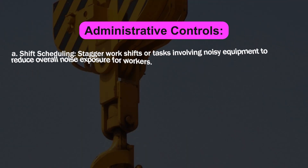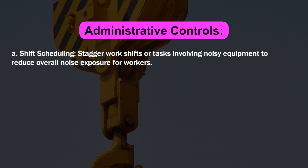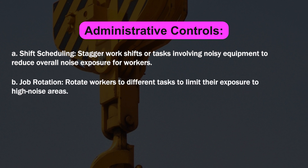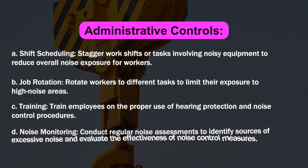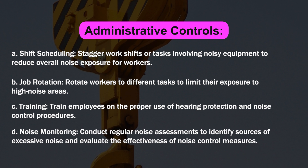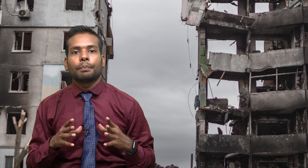Administrative controls include: shift scheduling — staggering work shifts or tasks involving noisy equipment to reduce overall noise exposure for workers; job rotation — rotating workers to different tasks to limit their exposure to high-noise areas; training employees on the proper use of hearing protection and noise control procedures; and noise monitoring — conducting regular noise assessments to identify sources of excessive noise and evaluate the effectiveness of noise control measures.